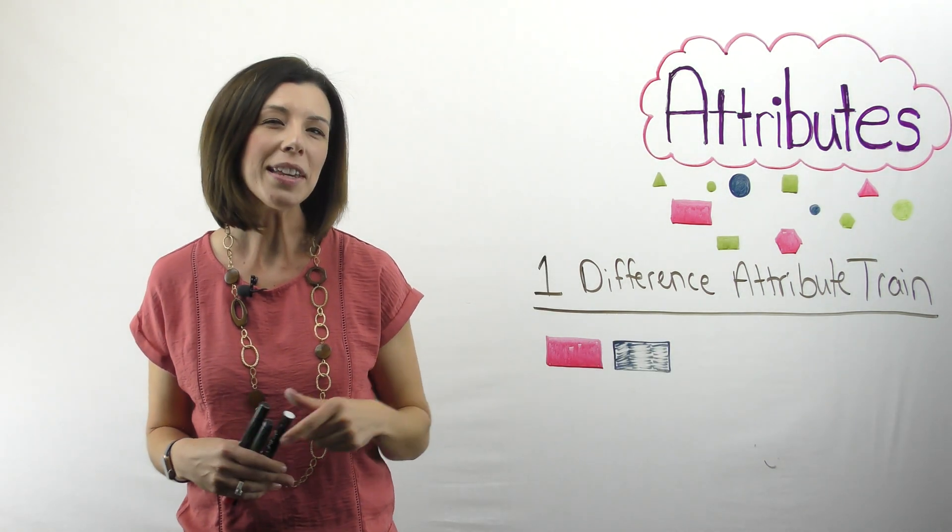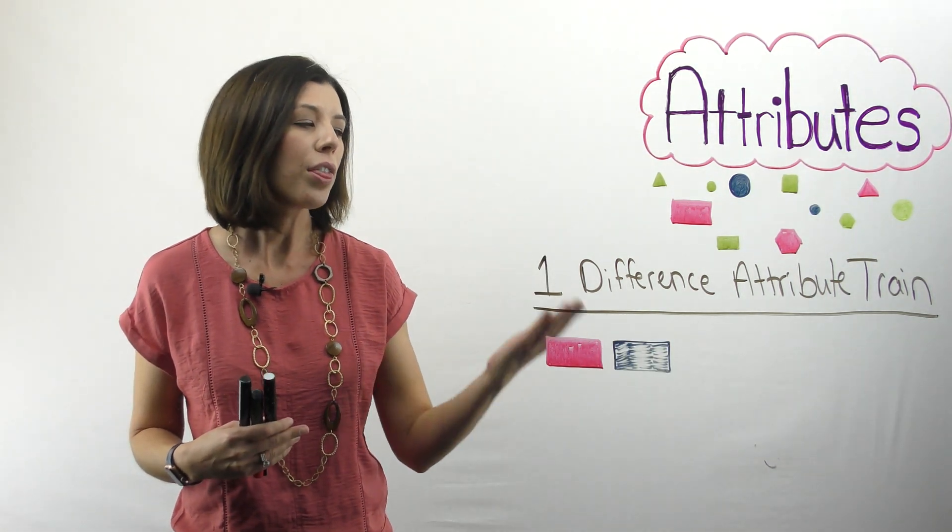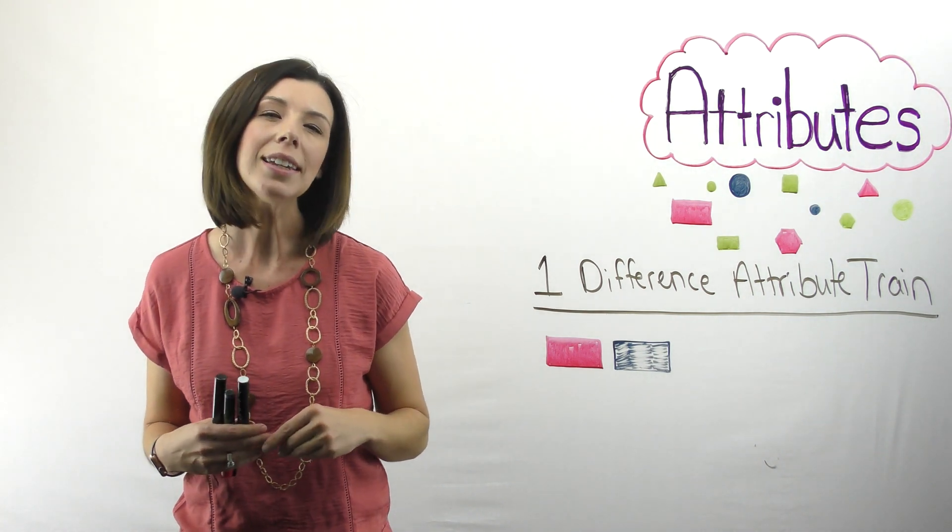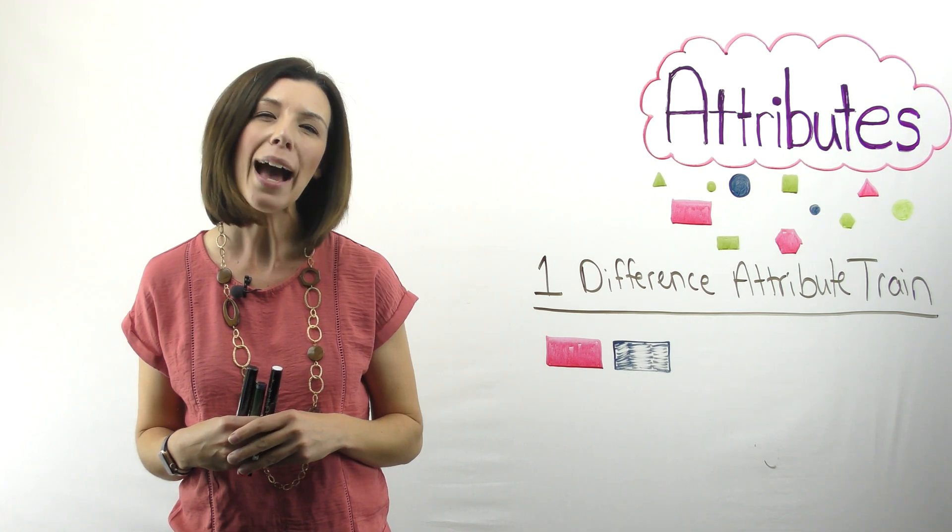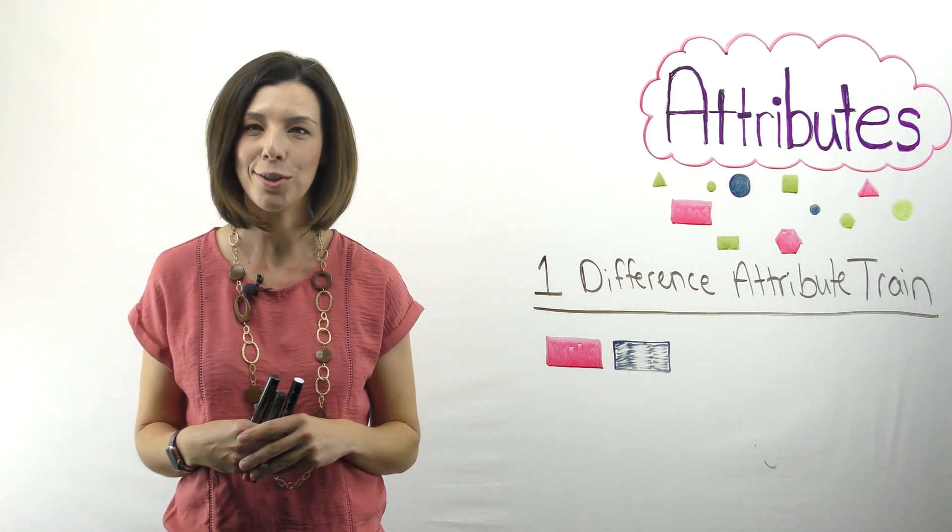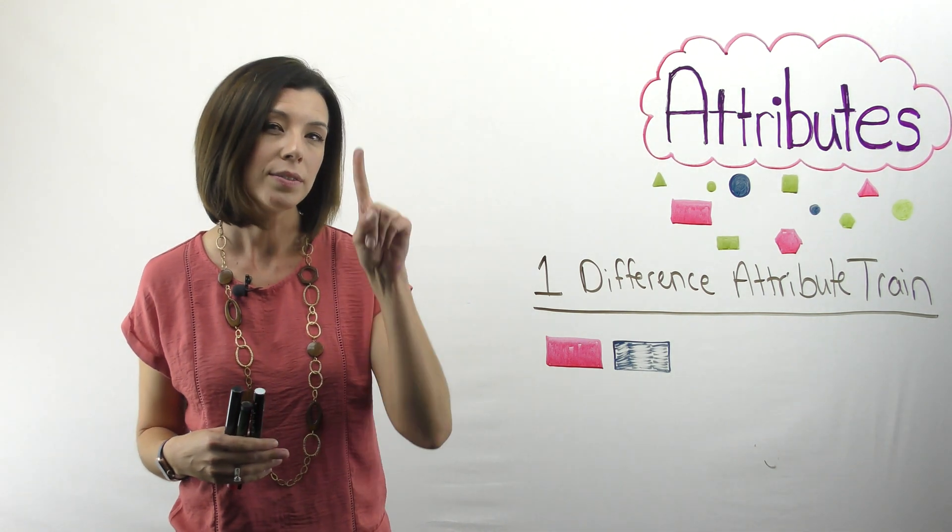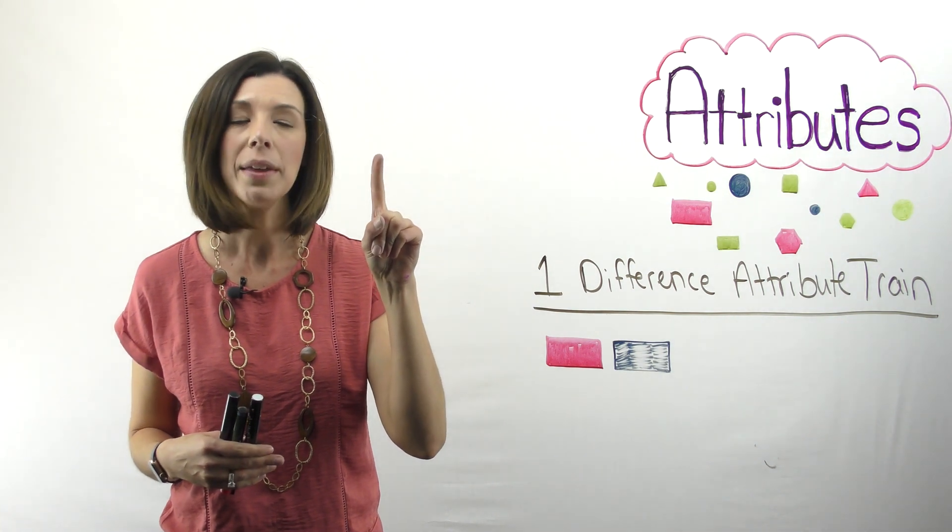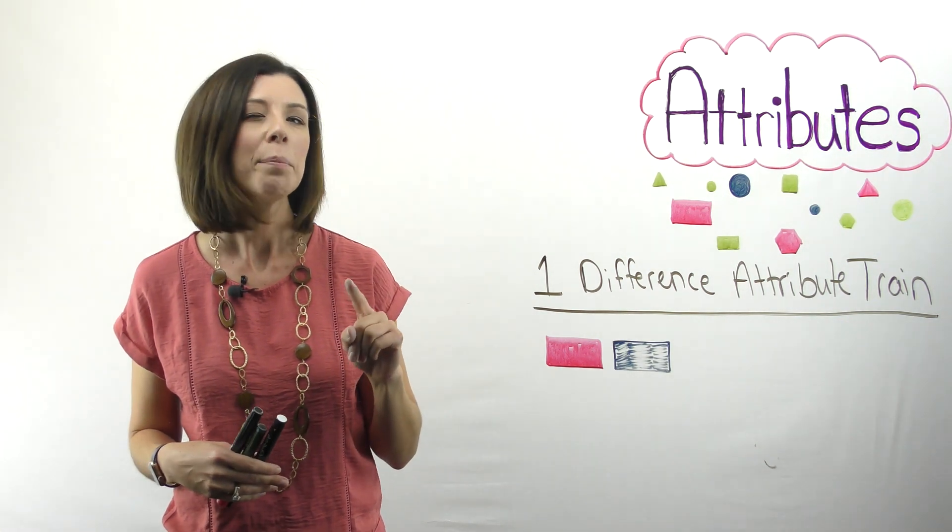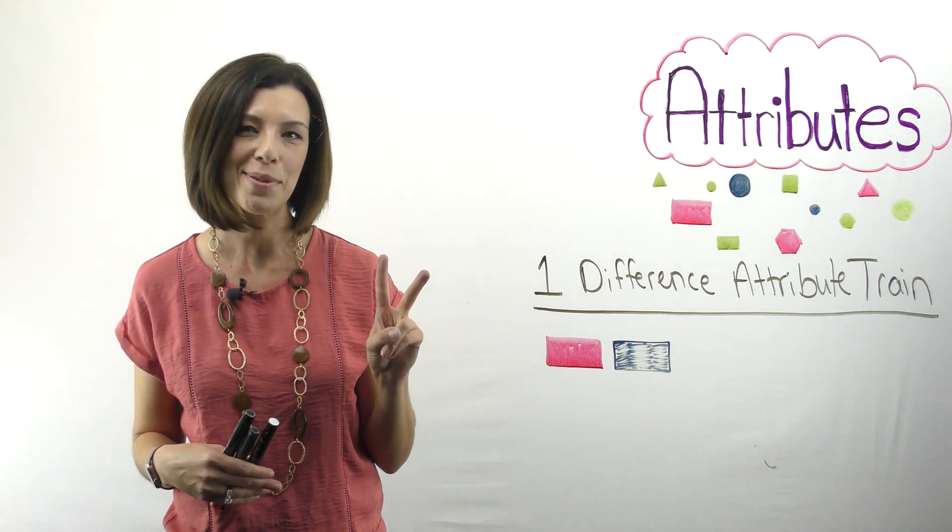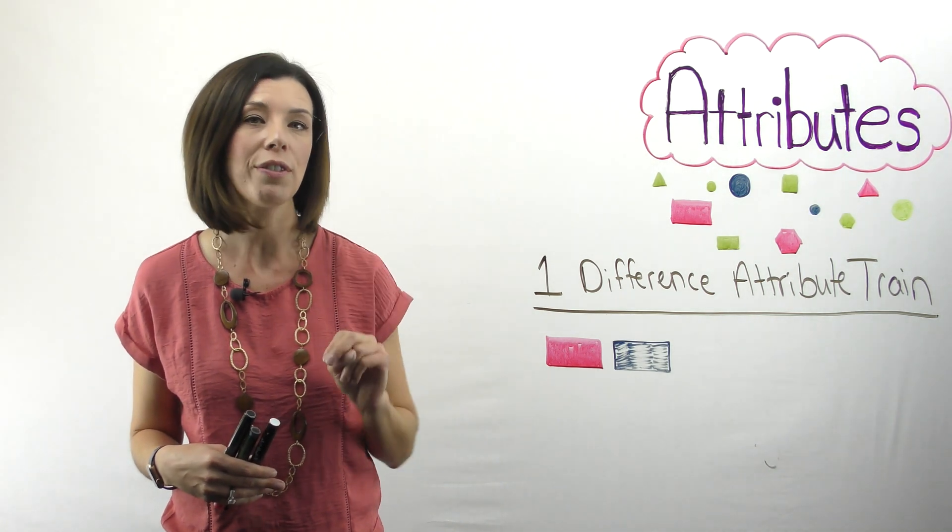Now, I want you to think about, could I throw on here the yellow large circle? Think about that for a second. How many attributes did I change? Well, if it's yellow, there's one. I changed the color. It's large still, so are these. So I didn't change that, but did I change my shape? So that would be a two difference attribute train. Remember, I only want one difference attribute trains.